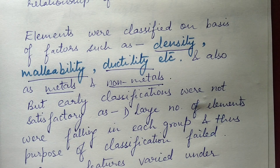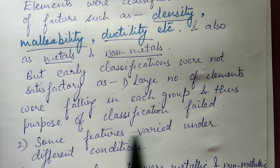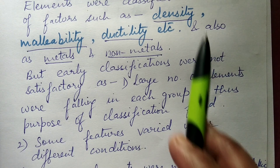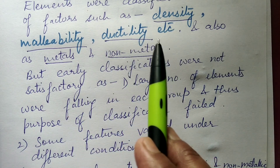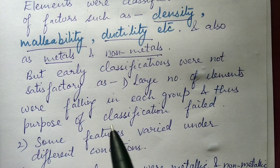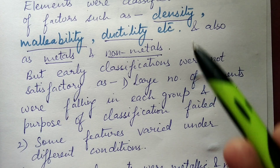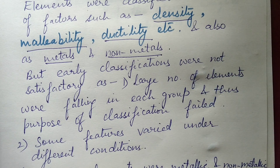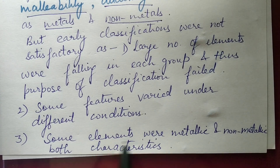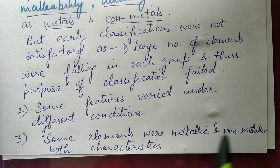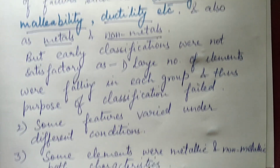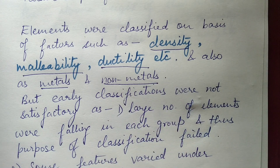The second problem was that some of these features varied under different conditions, so these factors changed and could not be reliably used for classification. Additionally, some elements were both metallic and non-metallic — they showed the characteristics of both metals and non-metals — so again these factors could not be used for classification.